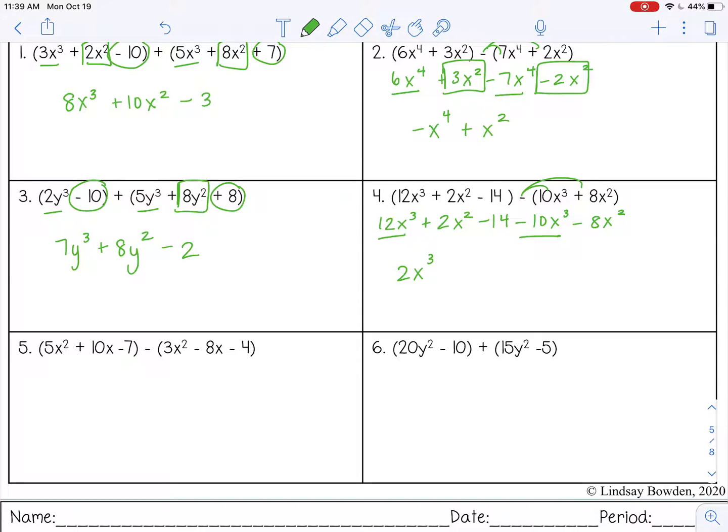Then I have positive 2x squared minus 8x squared. 2 minus 8, that's negative 6x squared. And then I have negative 14. There's no other constant, so I'm just going to bring that negative 14 down.